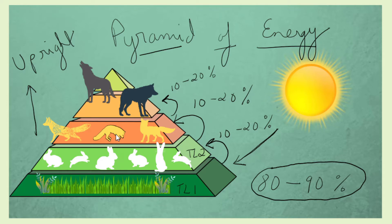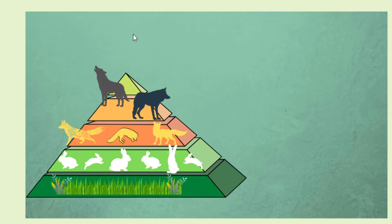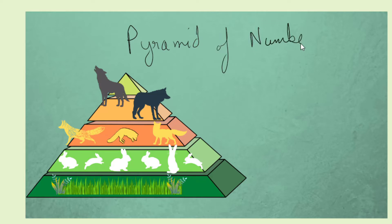The second type of ecological pyramid is the pyramid of number, which is a graphical representation of the number of individuals present per unit time per unit area in each trophic level of a given ecosystem.